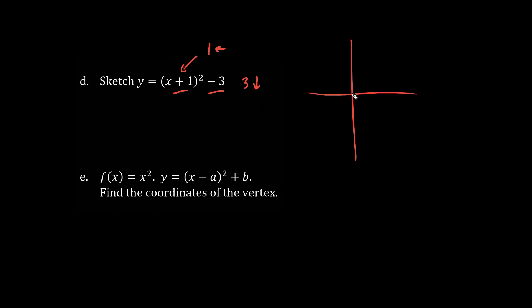So how do we sketch this? From the origin, we go 1 left, and 1, 2, 3 down. So this here is the parabola, approximately like this.